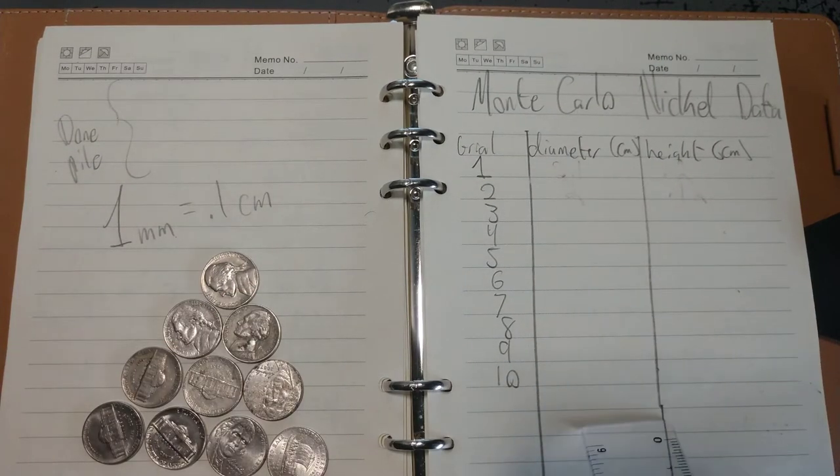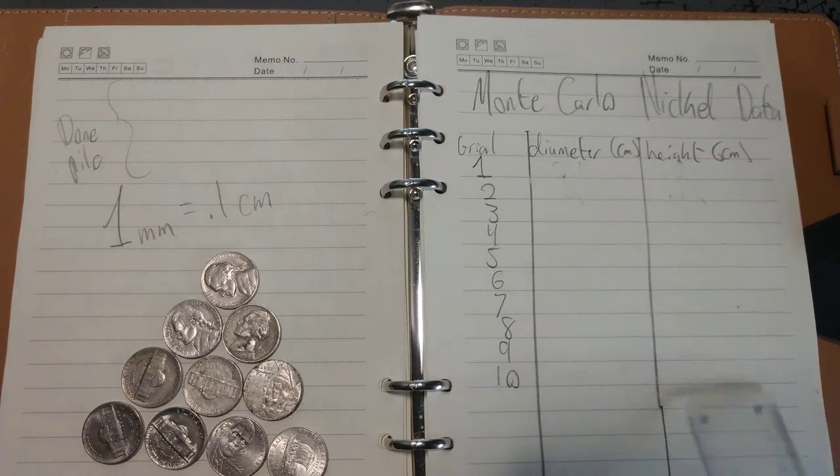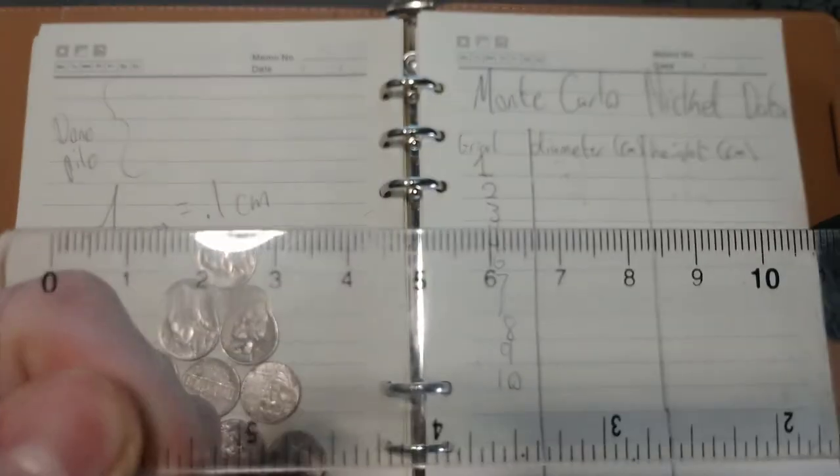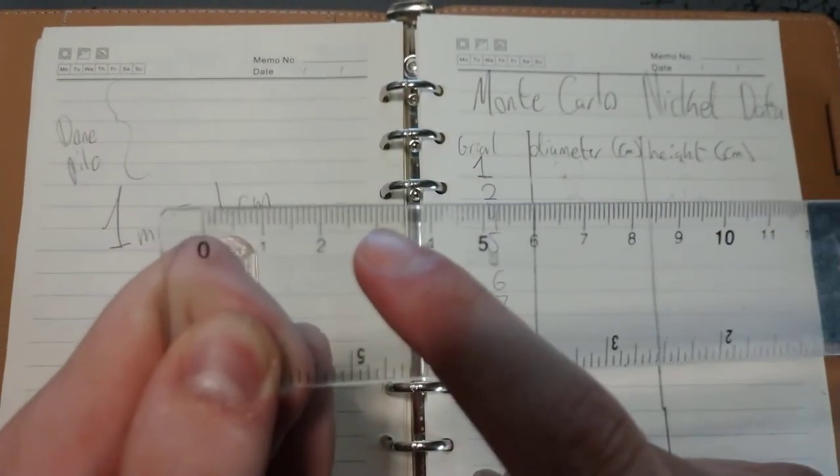I have their diameter in centimeters, spots for that, and spots for height in centimeters. I'm going to use my ruler. It's got centimeter markings, and it's accurate down to the millimeter.